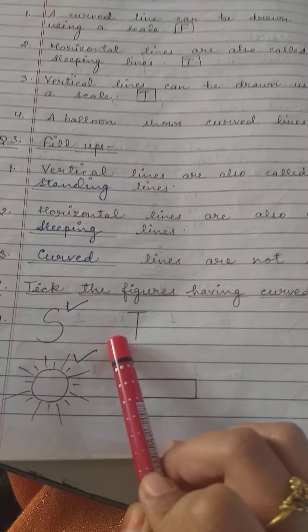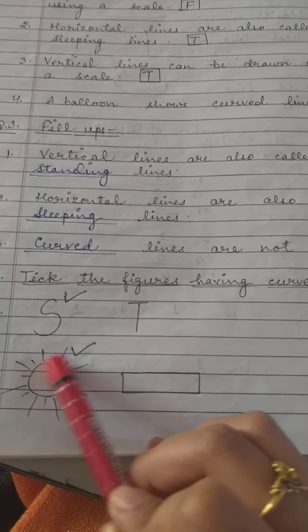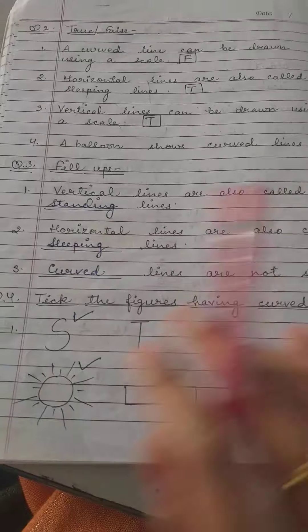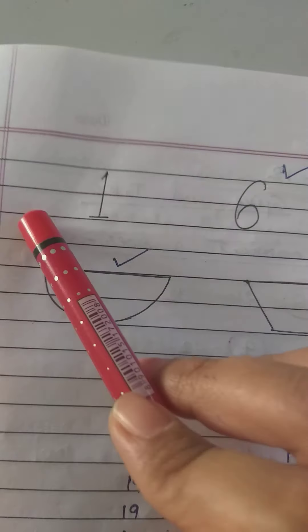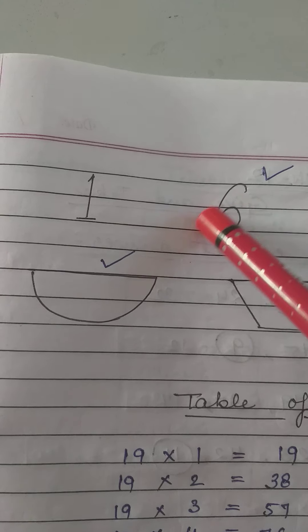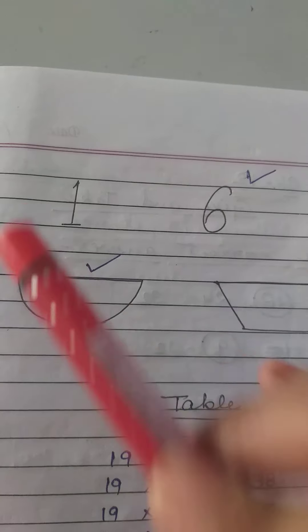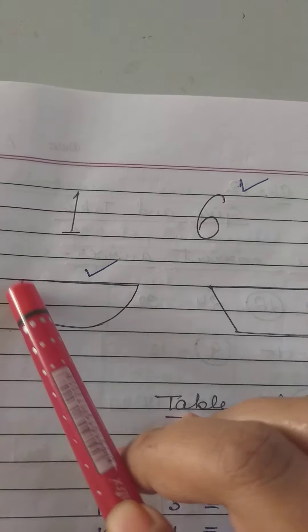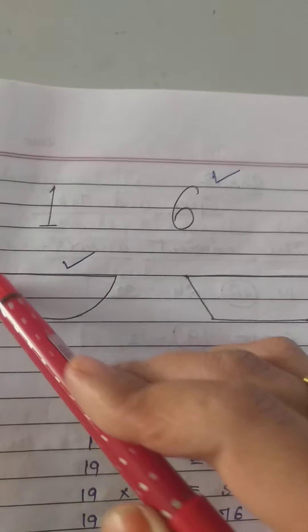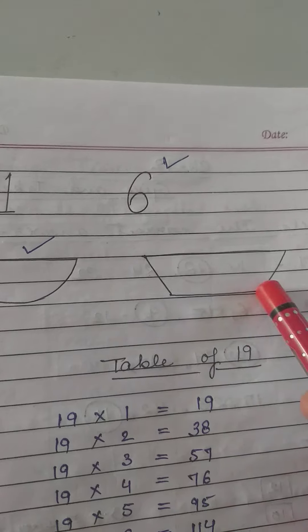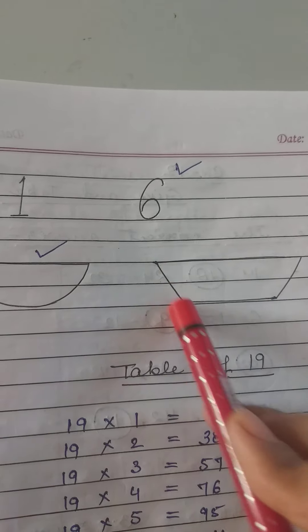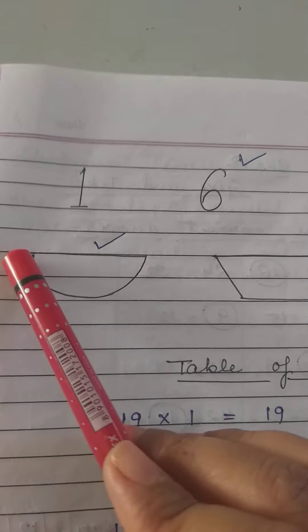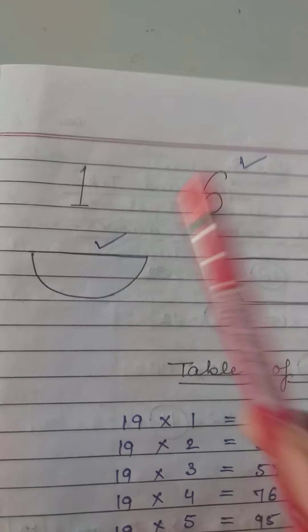So the sun has curved lines. Then one and six. This hemisphere and this sphere, and a circle. So we will choose this.